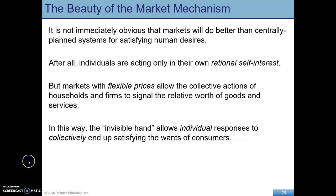As individuals pursue their own rational self-interest, flexible prices allow for coordination. Prices serve as signals — how much to produce, how individuals make decisions with the trade-offs that they face. And this is that invisible hand — that terminology comes from Adam Smith — so that as individuals pursue their own rational self-interest, they collectively end up satisfying the wants of consumers as well.